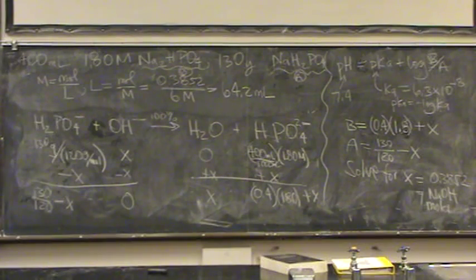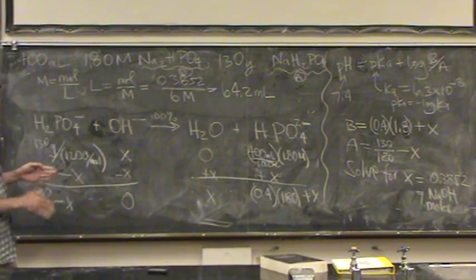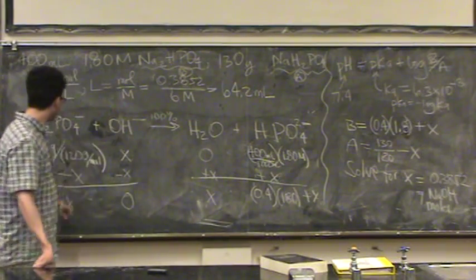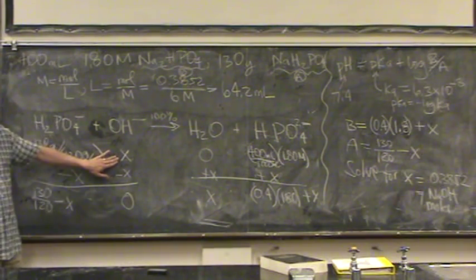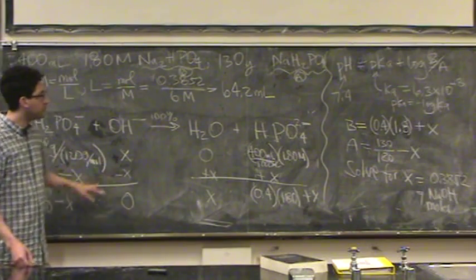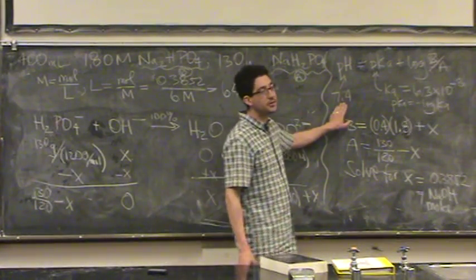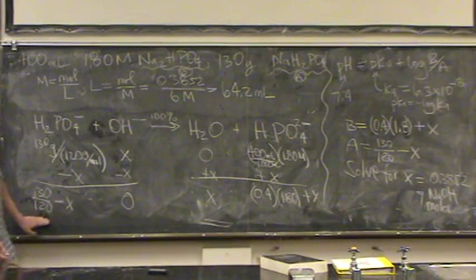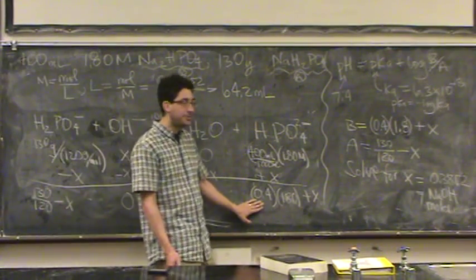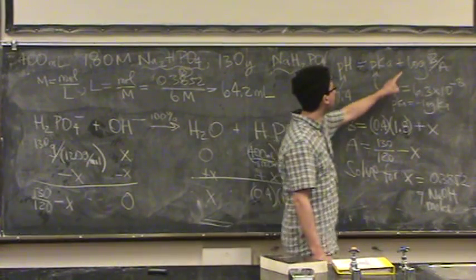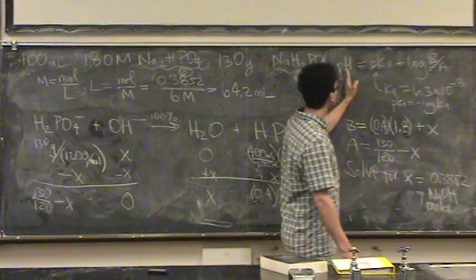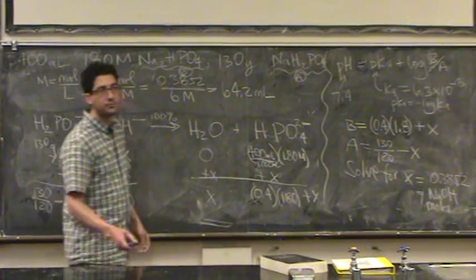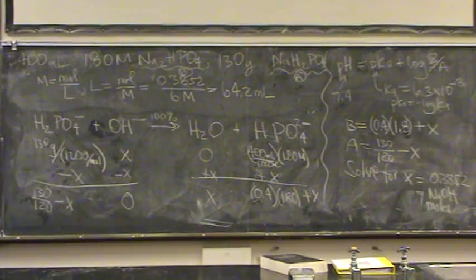Again, the difference between a normal problem and this one is usually we give you this volume. So, you'd know x. You can find the moles of it, but you wouldn't know the final pH. You wouldn't know this number. So, you'd find this value be some number, this value be some number. And you put it in for b and a, and you solve for the left-hand side. For us, we're solving for the right-hand side. So, it's kind of a reversal. Any questions on that?